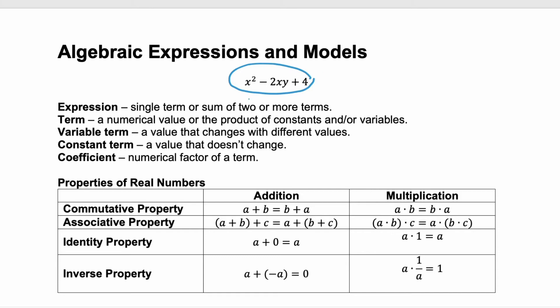Here we have three terms. A term is a numerical value or the product of constants and/or variables. Our three terms are x squared, negative 2xy, and positive 4.